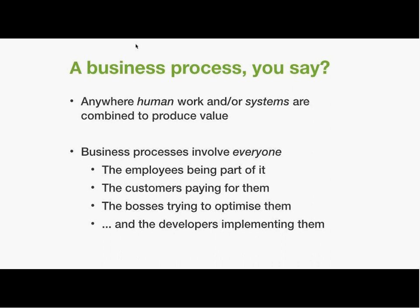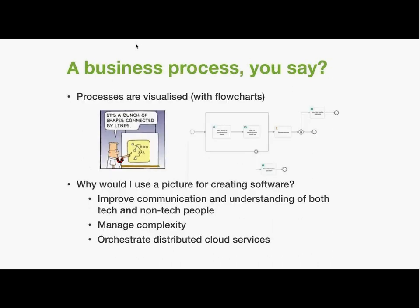That's where a business process management system, a BPM system like Activiti, comes into play — it executes and automates those processes. A business process is unlike something purely technical like a web container. It involves everybody: the employees executing it in their day-to-day jobs, the customers who pay for it, the managers trying to optimize it, and of course the developers implementing it. Often when business processes are discussed, you've got people standing next to a whiteboard drawing circles and arrows, trying to understand how their company does business.